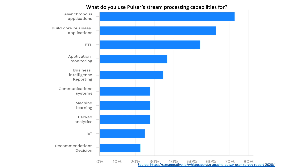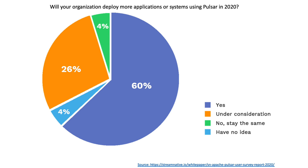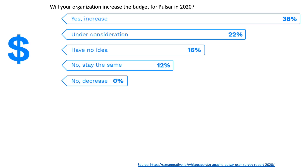What are people using Pulsar's stream processing capabilities for? Asynchronous applications was dominant, but also building core business applications — something we've done here at Overstock. Interestingly, ETL is on this list. A lot of people think of using Spark, a batch processing engine, or Hadoop for ETL. But when you use the Kappa architectural pattern, you can leverage Pulsar even for ETL workloads by moving everything to the stream. The vast majority of respondents will be deploying more applications on Pulsar in 2020, and 0% said their budget for Pulsar will be decreasing.